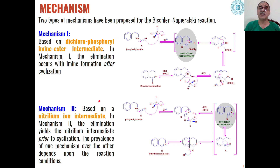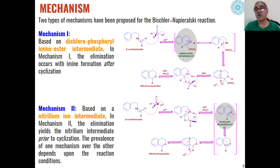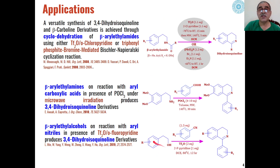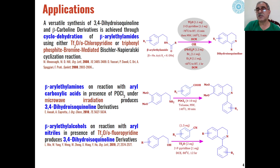This carbocation undergoes electrophilic aromatic substitution through the aromatic ring, which ultimately leads to the formation of dihydroisoquinoline. Depending upon the reaction conditions, the conversion of beta-aryl ethylamide to dihydroisoquinoline will proceed either through mechanism 1 or mechanism 2, but in both cases the product formed is the same. In recent years, some modifications in the reaction conditions have been shown to give the same products formed in Bischler-Napieralski cyclization reactions.